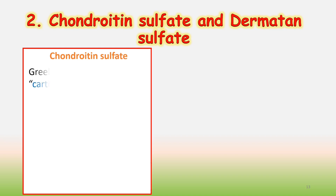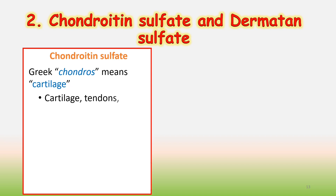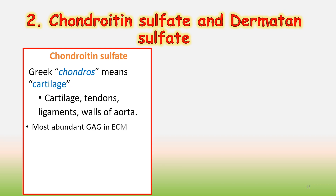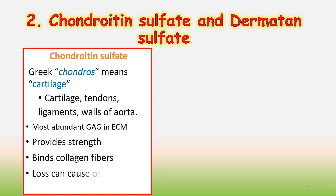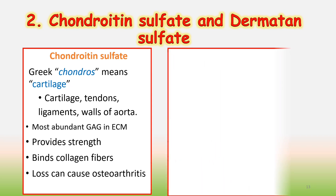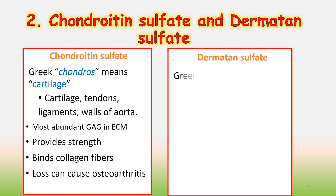The second division of GAGs is chondroitin sulfate and dermatan sulfate. Chondros is a Greek word meaning cartilage. Chondroitin sulfate is present in cartilage, tendons, ligaments, and walls of the aorta. It is the most abundant GAG in the extracellular matrix, provides strength, and binds collagen fibers. Loss of chondroitin sulfate can cause osteoarthritis.